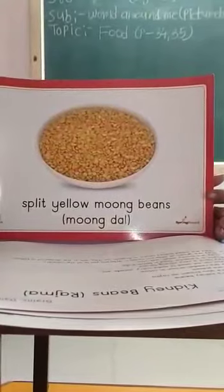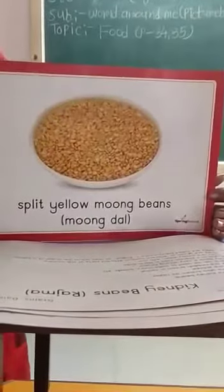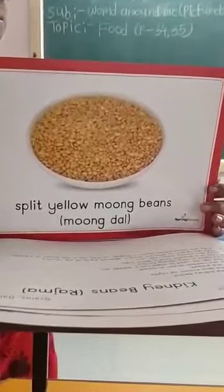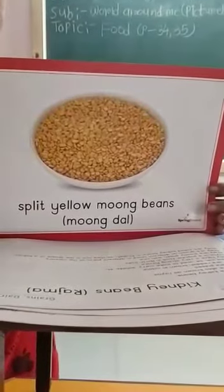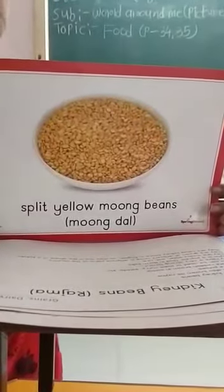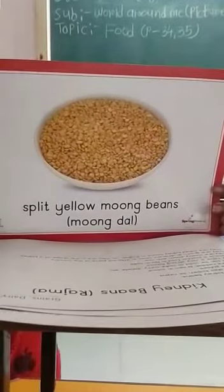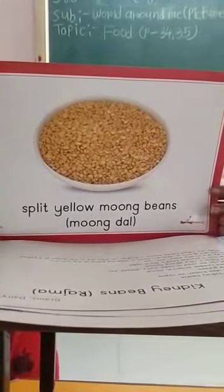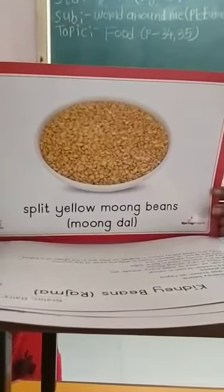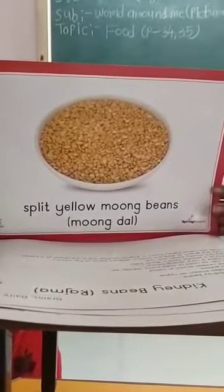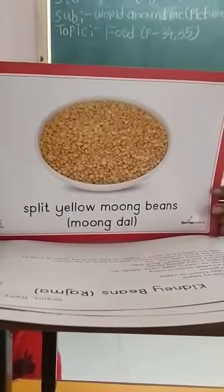These are split yellow mung beans — mung dal. These are also called mung dal or yellow mung dal. These are yellow in color. These are skinned, split, and flayed. Mung dal is very commonly used in a variety of dishes like dal, khichdi, kheer, and halwa.